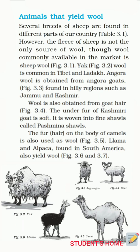Several breeds of sheep are found in different parts of our country. However, the fleece of sheep is not the only source of wool — though wool commonly available in the market is sheep wool. Yak wool is also common in Tibet and Ladakh. Angora wool is obtained from angora goats found in hilly regions such as Jammu and Kashmir. The under-fur of Kashmiri goat is soft and is woven into fine shawls called Pashmina shawls. The fur on the body of camels is also used as wool, and llama and alpaca found in South America also yield wool.